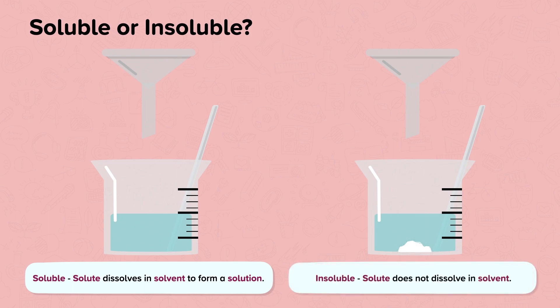To summarize: Soluble — solute dissolves in solvent to form a solution. Insoluble — solute does not dissolve in solvent. It will remain behind and often sink to the bottom of the beaker.